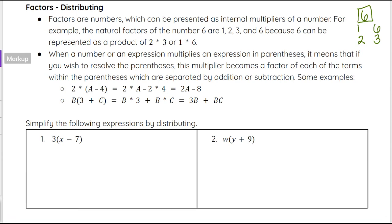For example, if we look at 2 times (a minus 4): a is a term in the parentheses and 4 is a term, separated by subtraction. You can think of that 4 as a negative 4 or as subtraction. So we distribute the 2 to each term: 2 times a minus 2 times 4. 2 times a is written 2a, and 2 times 4 is 8, with subtraction in between — giving us 2a minus 8.